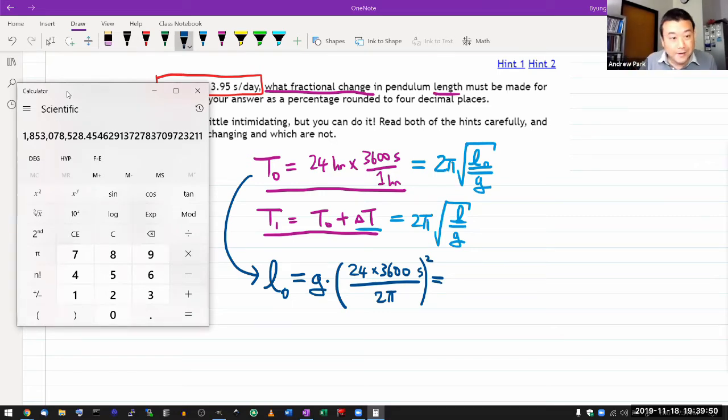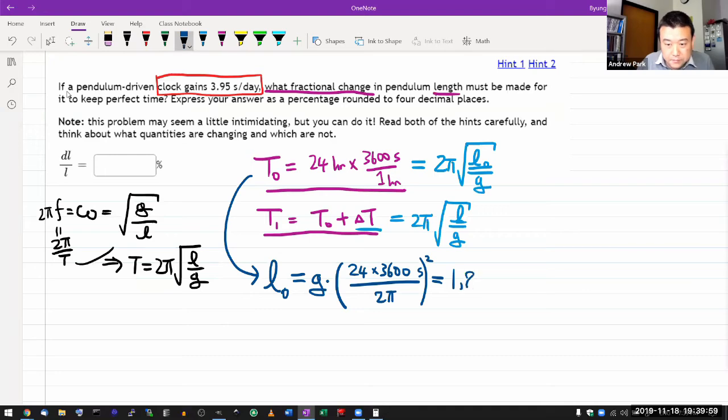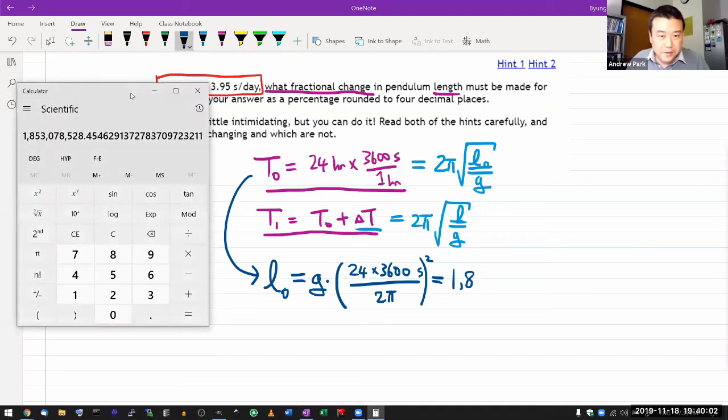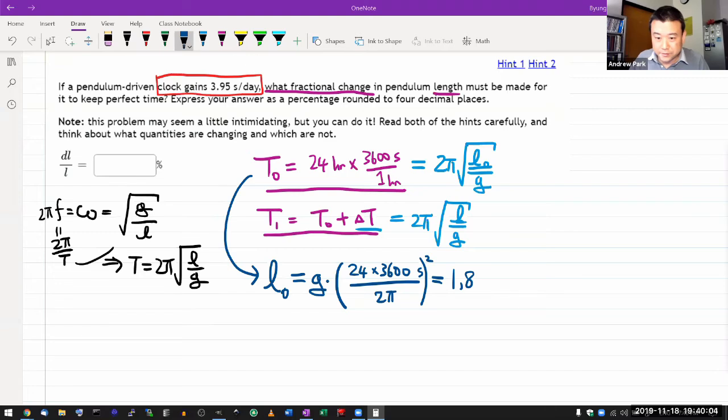So this is what I have. Once again, this is a ridiculous clock. It's super long. It's a ridiculous clock. So let me write this down. I'm just going to just move that scientific calculator over so I can actually look at it to write it down: 1,853,078,528.45. The reason I'm keeping so many significant figures is I have a sense the difference is going to be small. So I don't want to prematurely round.